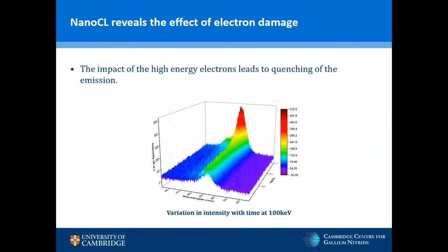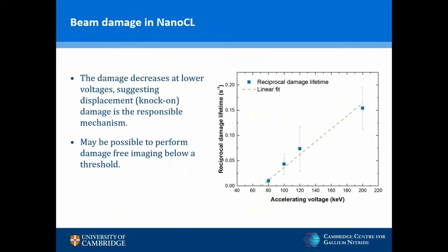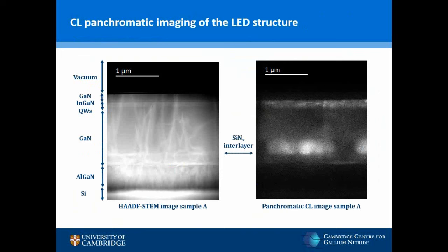When we first began performing STEM-CL, one of the challenges was quenching of the emission with exposure to the electron probe. Beam damage is well reported in the nitrides; however, the CL intensity declines immediately with time, as shown at 100 kV. To understand the damage mechanism, we measured the decay half-life in CL intensity over accelerating voltages ranging from 80 to 200 kV, and found that damage is substantially reduced at lower accelerating voltages, suggesting that displacement or knock-on damage is responsible. The linear reduction in damage suggests it may be completely suppressed, and we tentatively suggest there may be a threshold below which it is possible to perform pristine, damage-free nanocathodoluminescence imaging.